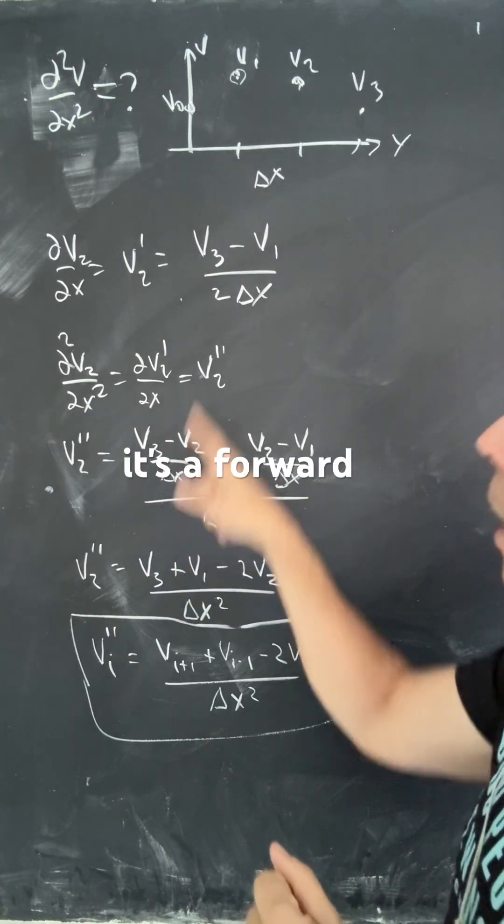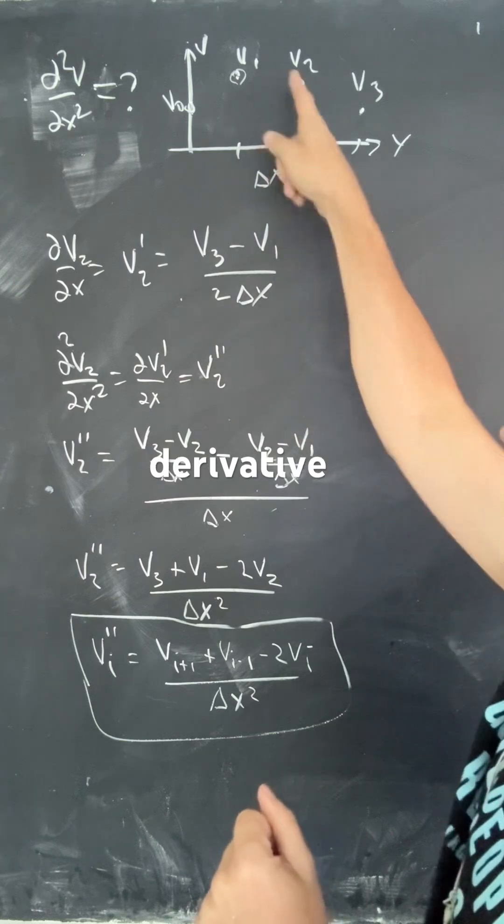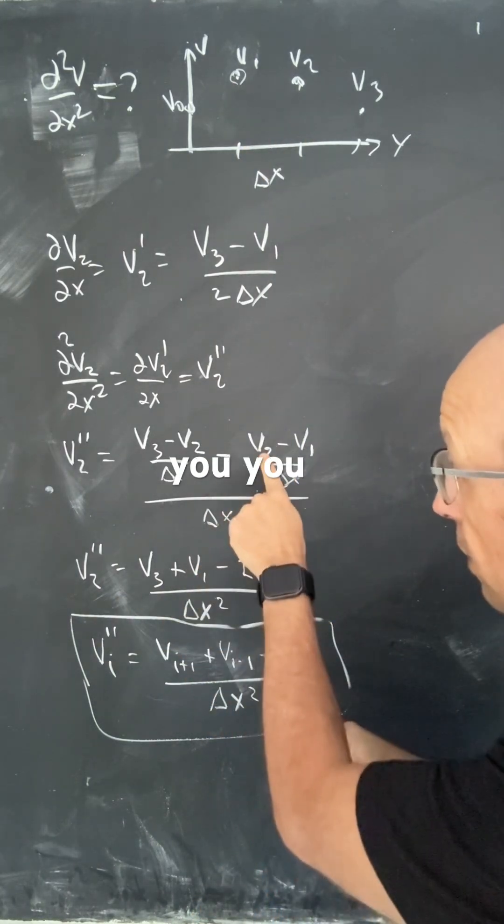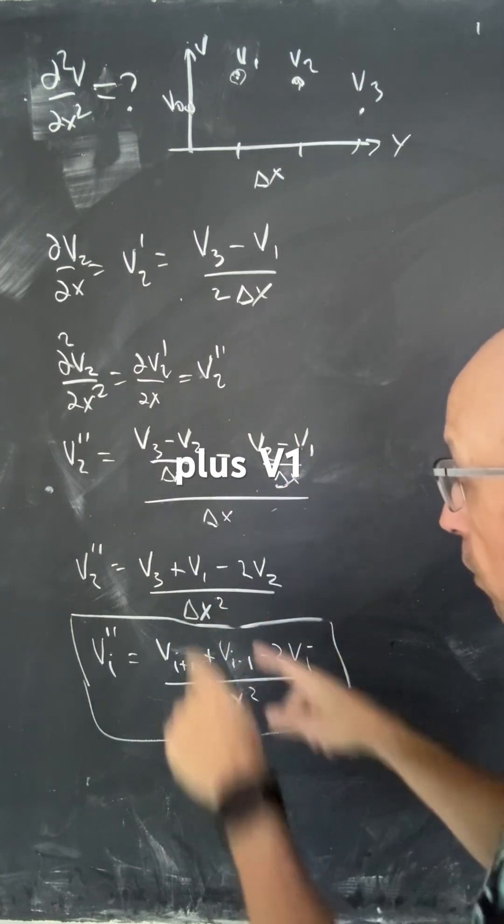So that's going to be, this is the first derivative, it's a forward derivative, I'm just using these two points. The previous derivative for those two points, and then I divide by delta x. When you work it all out, you get two of the v2s, right, minus v2 minus v2, plus v1, so you get that.